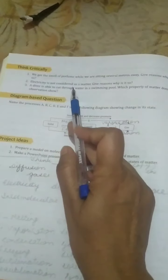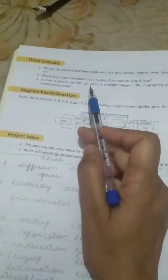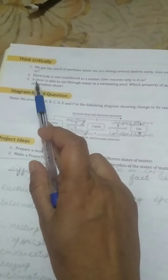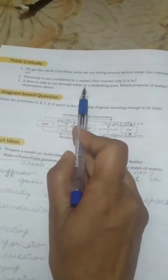Second, electricity is not considered as matter. Give reason why it is so. Answer: electricity does not occupy space, that is why electricity is not considered as a matter, because matter are those which occupy the space or have volume. Third, a diver is able to cut through water in a swimming pool. Which property of matter does this observation show? Observation is that due to the intermolecular space.